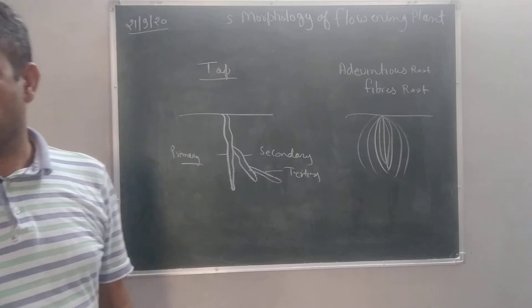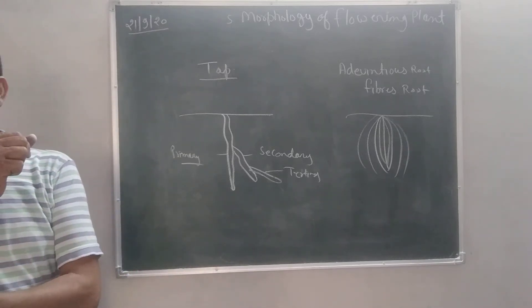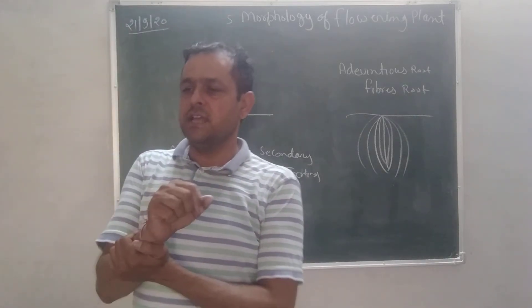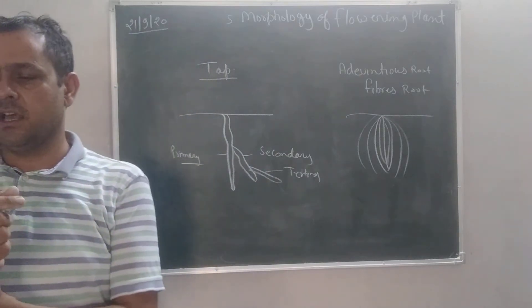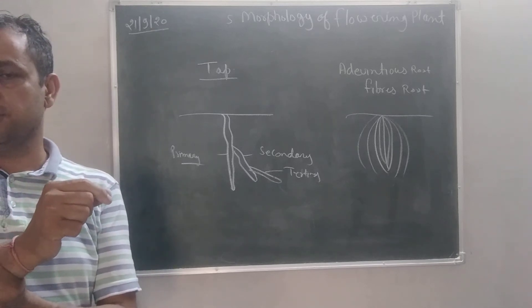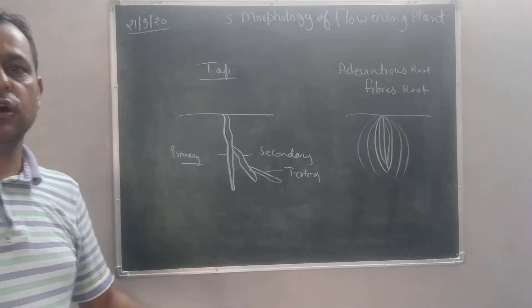Characters of the root: They normally constitute the descending part of the plant axis. Root develops from radical. Roots are cylindrical structure. Root is positively geotropic. Buds and leaves are usually absent. Root is colorless due to absence of chlorophyll. Root cap is present over the apex. The branch of root arises from inner region, thus they are endogenous.